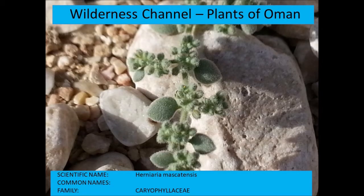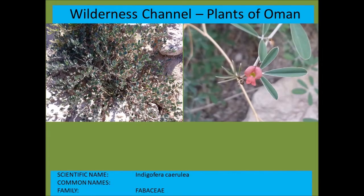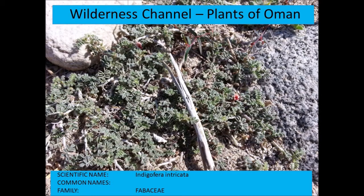Herniaria muscatensis is another small creeping plant very similar to Aizoon canariense in general habit. Indigofera cerulea is another indigo species; Indigofera endecaphylla is a very small species sometimes confused with Aizoon. These plants are nitrogen-fixing, making them ecologically important — animals like Indian crested porcupines frequent areas where they grow.